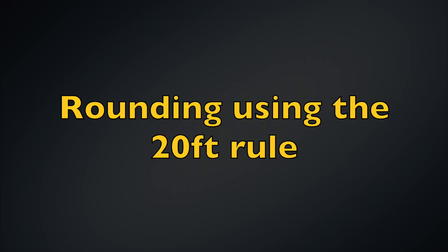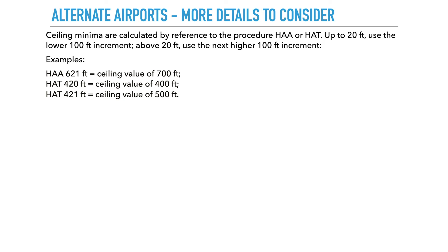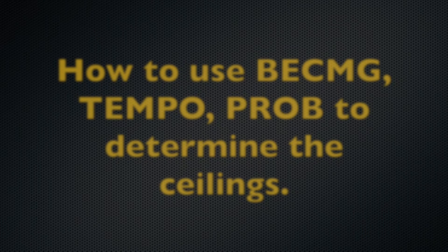When it comes to calculating these altitudes, you can round up or round down depending on the 20-foot rule. For example, if your height above airdrome is 621 feet, you round up because it's above 20. If it's 420 feet, you round down to 400. And if it's 421 feet, you round up to 500. That's the 20-foot rule.